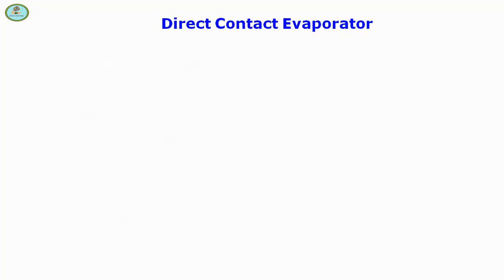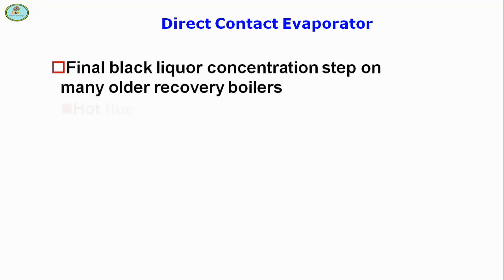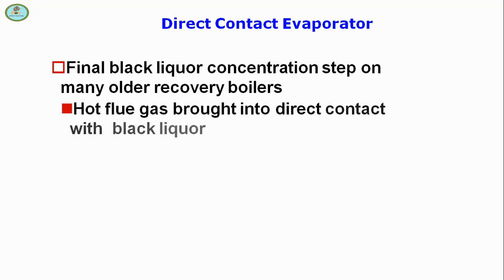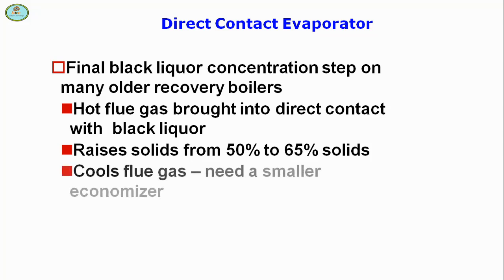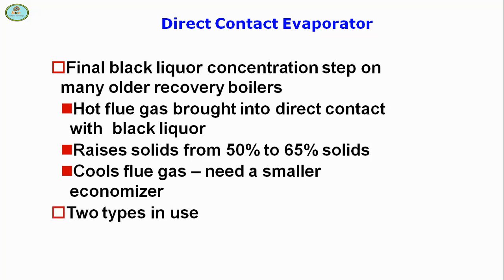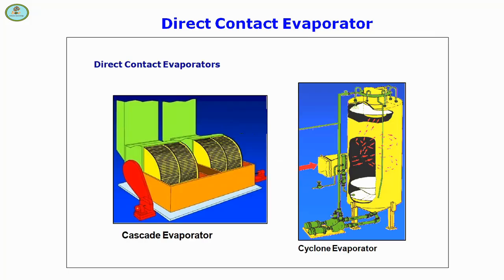The direct contact evaporator is the final black liquor concentration step on many older recovery boilers. Hot flue gas is brought into direct contact with black liquor, raising solids content from 50 to 65 percent. This cools the flue gas and requires a smelt economizer. Two types are in use: the cascade evaporator and the cyclone evaporator, both of which are shown here.